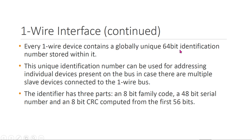You can see how every One-Wire device contains a globally unique 64-bit identification number stored within it. This unique identification number can be used for addressing individual devices present on the bus, in case there are multiple slave devices connected to the One-Wire bus. The identifier has three parts out of the 64 bits: an 8-bit family code, a 48-bit serial number, and an 8-bit CRC.